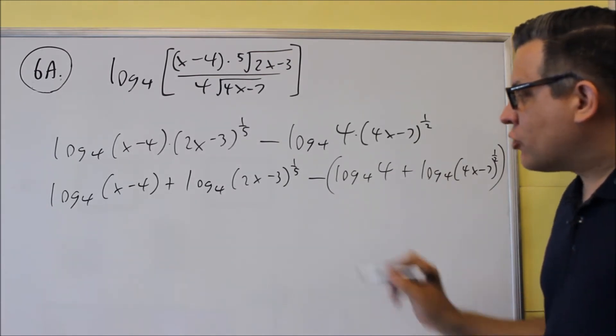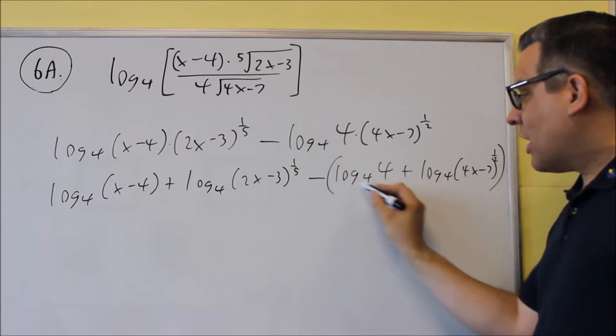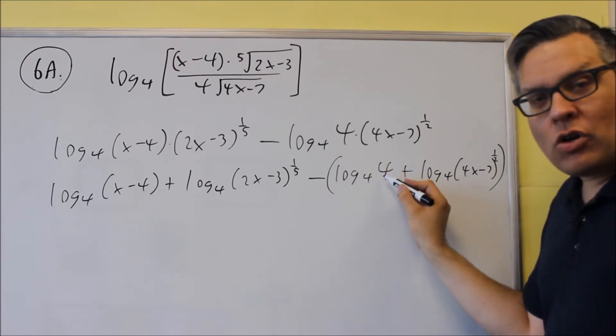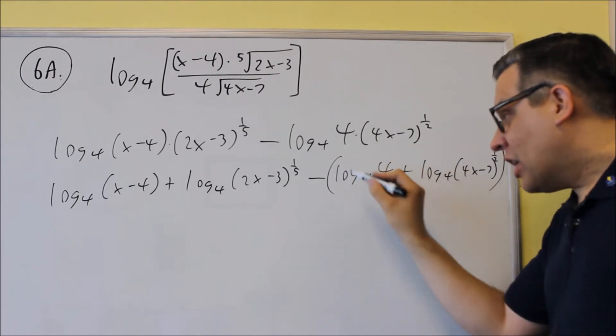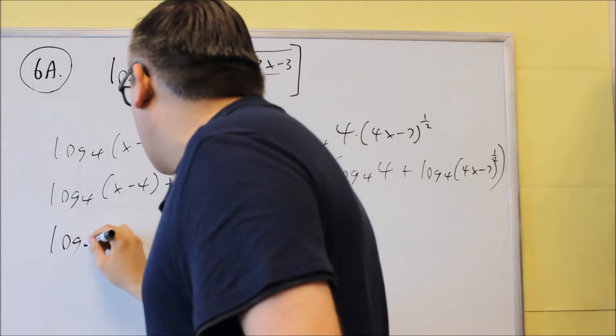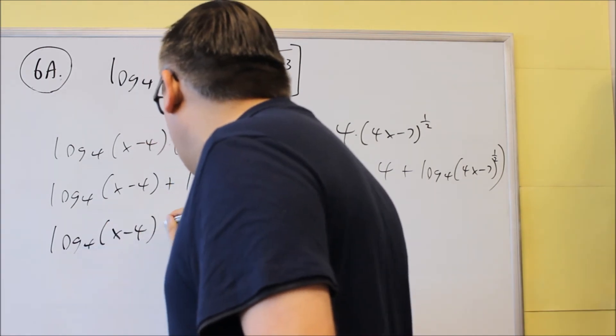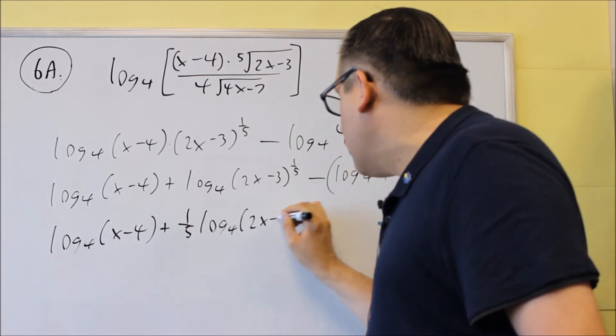Now the last thing we're going to do is we're going to bring down the powers and then anything like this, log 4, 4, that's going to turn into a 1. So it says evaluate that if possible. So that's why we're going to do that last step. So we're going to do log 4x minus 4 plus a 1 fifth is going to come down, log 4 of 2x minus 3.